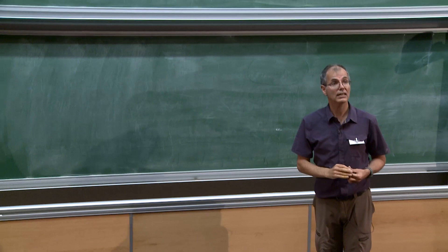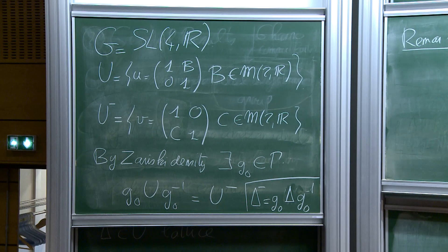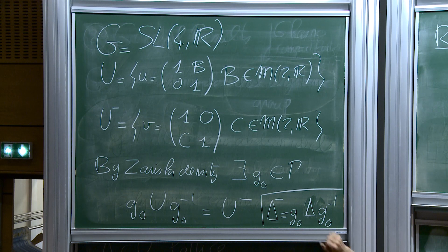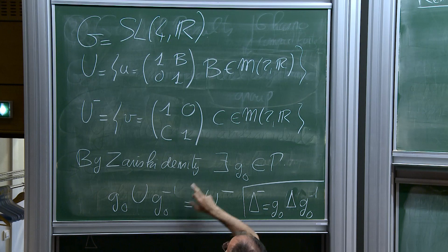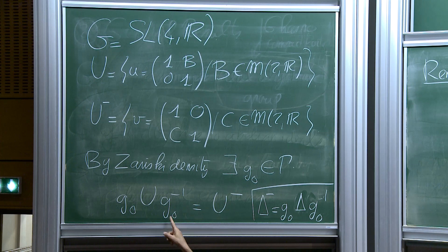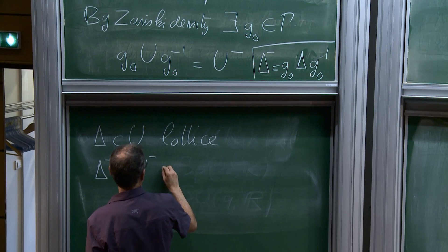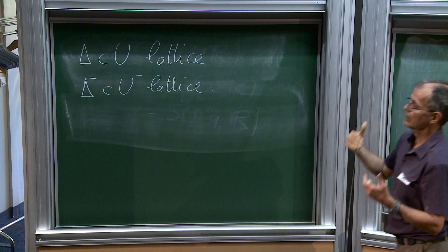Let me restate the theorem for SL₄(ℝ). I start with the group SL₄(ℝ) and this unipotent subgroup. By Zariski-density, I am able to find some G₀ in Γ which will take the unipotent group U and put it in an opposite way, so that I can find a basis for which G₀UG₀⁻¹ will be exactly the group of lower triangular matrices of this shape. Conjugating by G₀ gives a lattice δ⁻ in U⁻. So I have a lattice in U and a lattice in U⁻.